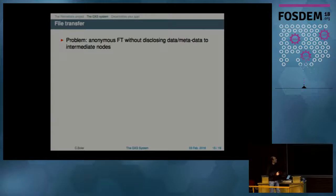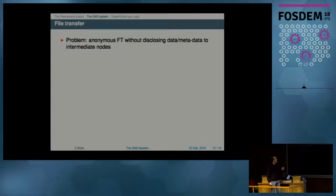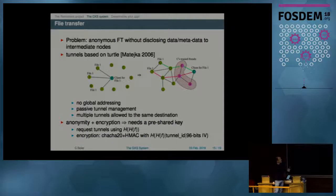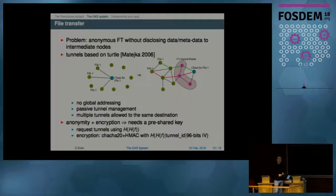For file transfer, we could not distribute files in GXS messages because of the redundancy of data across the network. Instead, we designed a system based on a friend-to-friend approach using anonymous, end-to-end encrypted tunnels. I won't detail the encryption here, but I can provide more information in questions if you want.